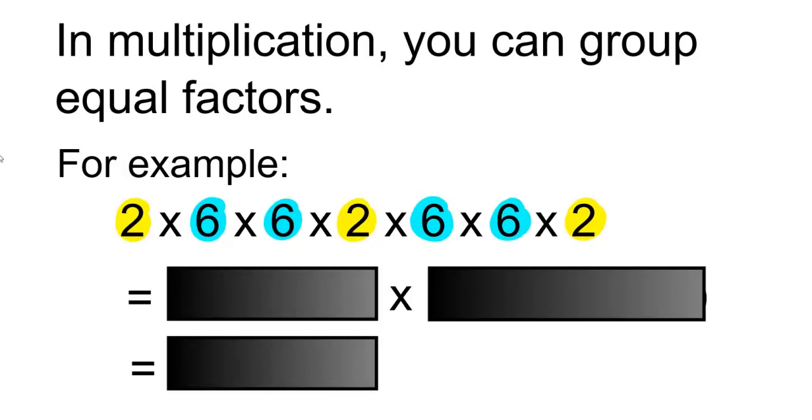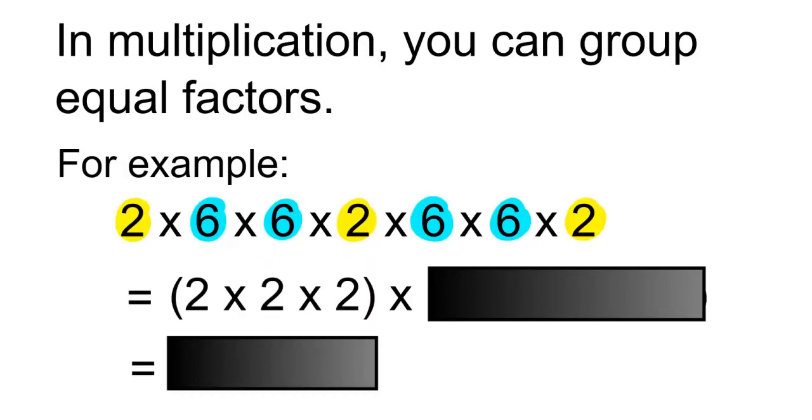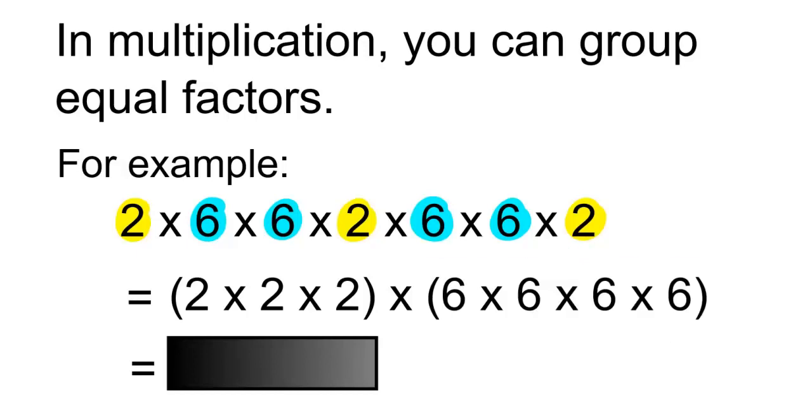You can rewrite these and group them together. So this can be written as, in brackets, 2 times 2 times 2 multiplied by, in brackets, 6 times 6 times 6 times 6.